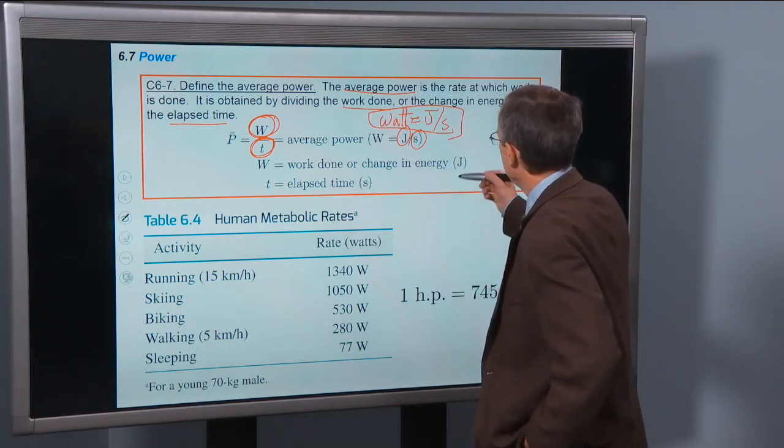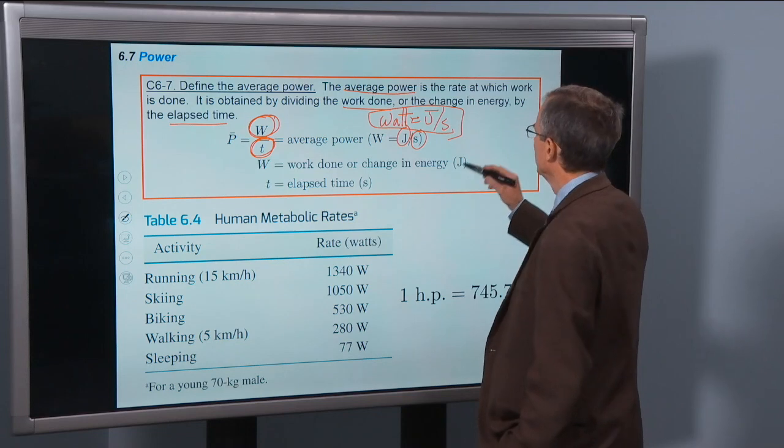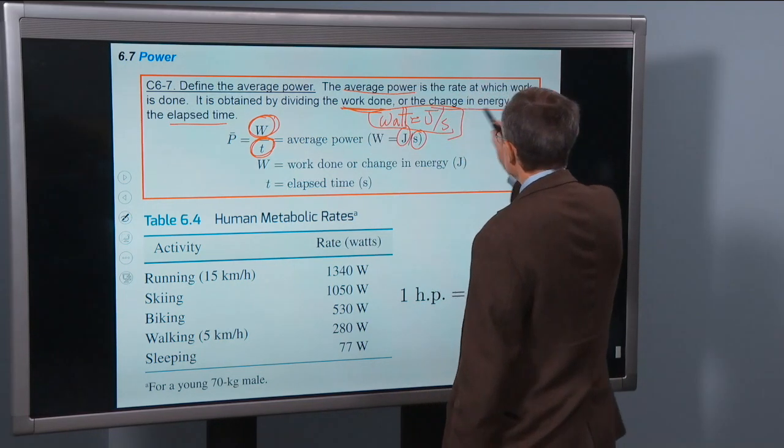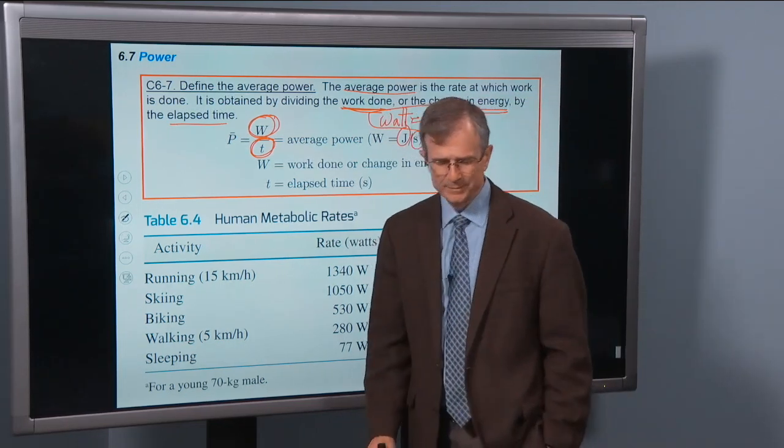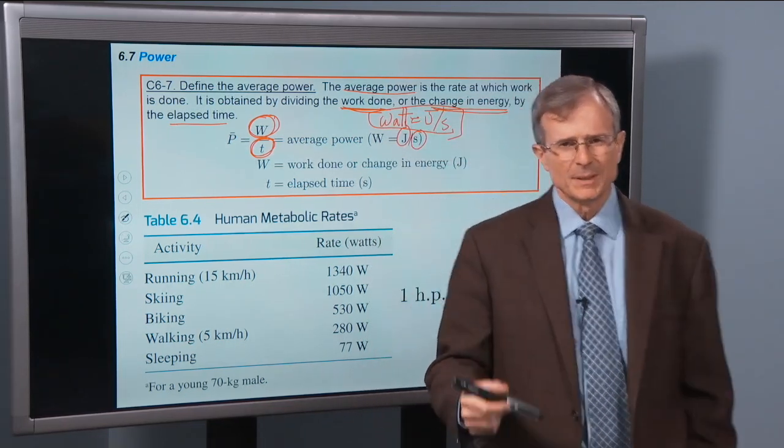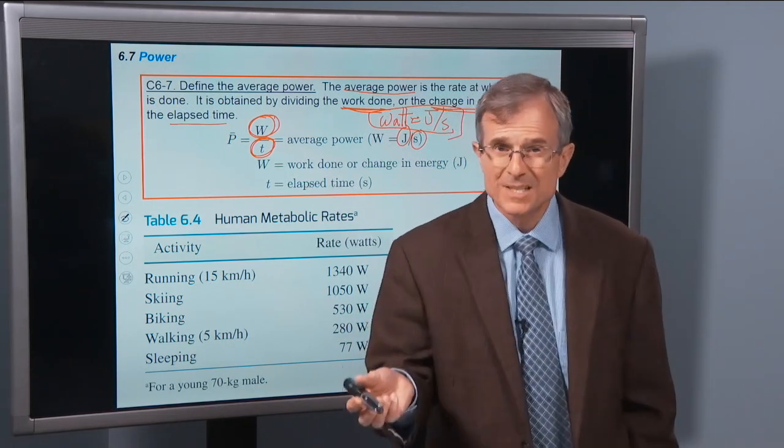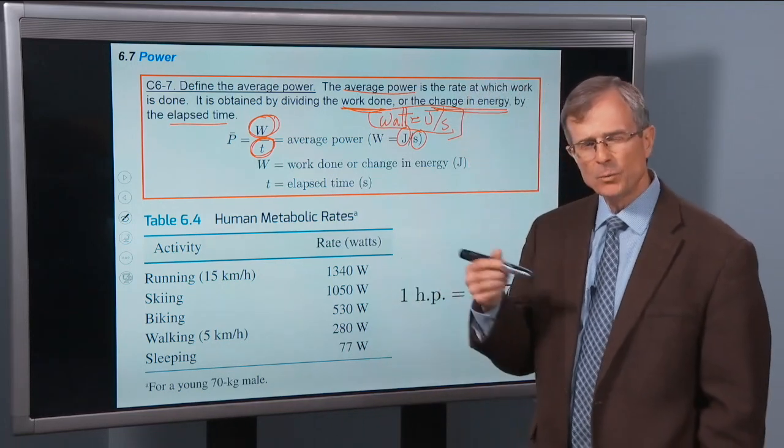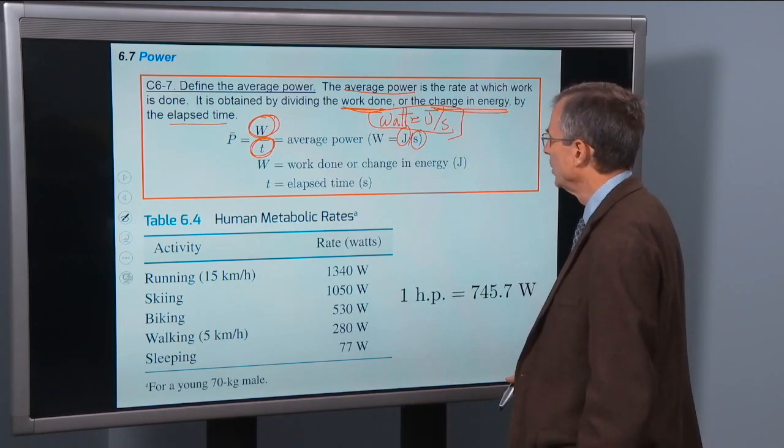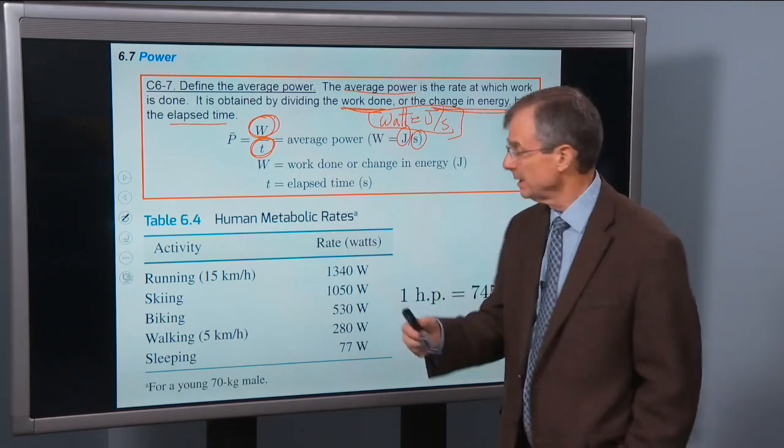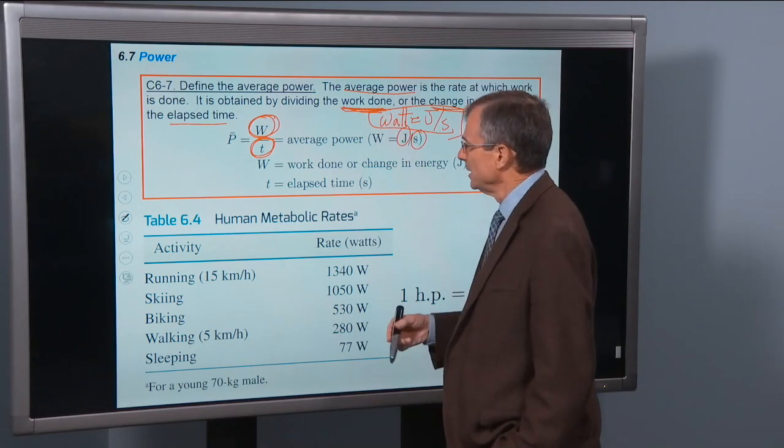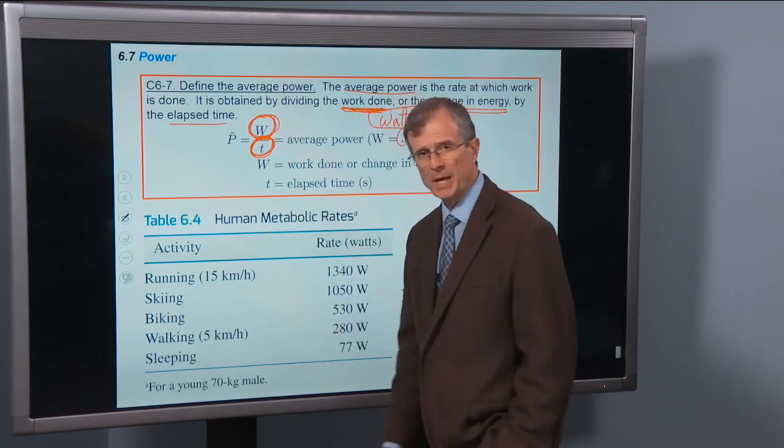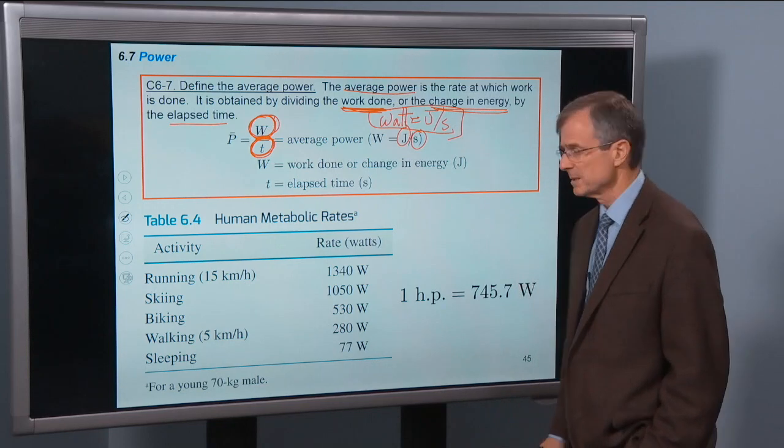And that relates to the second way of thinking about power. It's the work done or the change in energy. So that 100 watt light bulb uses up 100 joules per second of energy. It's the rate at which you use up energy in that light bulb, or alternatively, the rate at which work is done. So that's the bottom line. Work divided by time equals power, measured in watts, joules per second.